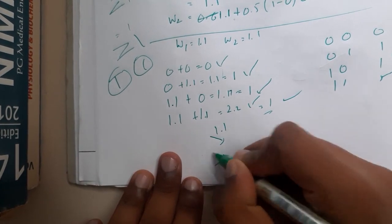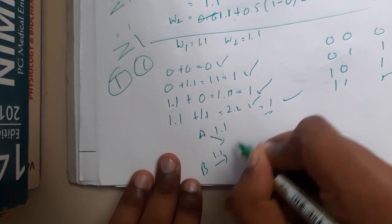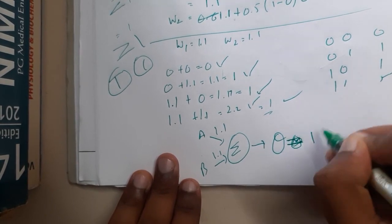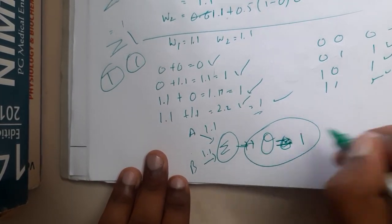Your perceptron will look like this: you'll have 1.1 here, 1.1 here, input A, input B, your perceptron with the activation function, your threshold value at 1, and you'll be getting the output.